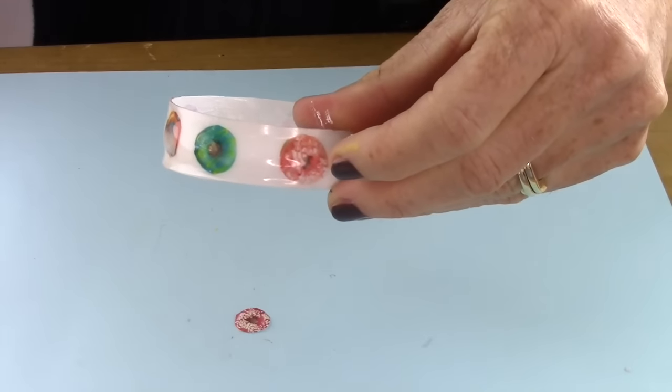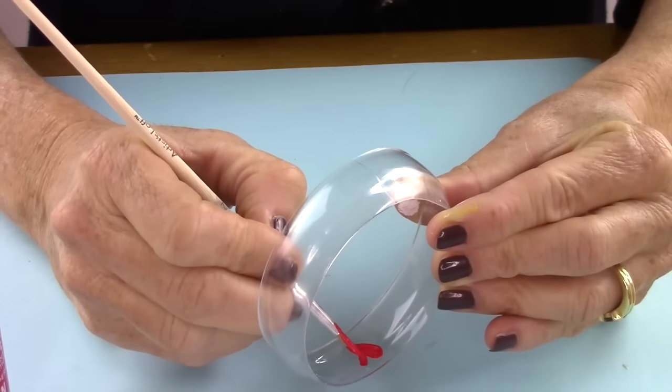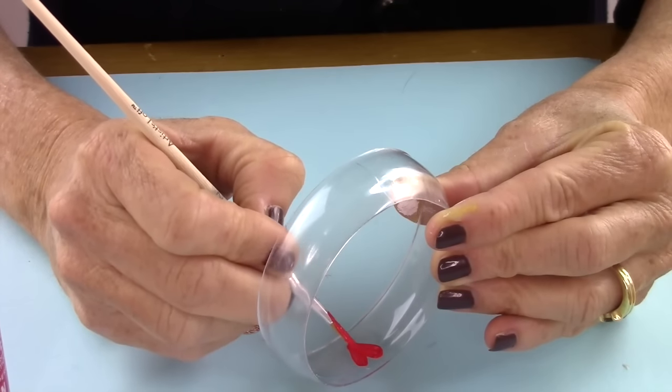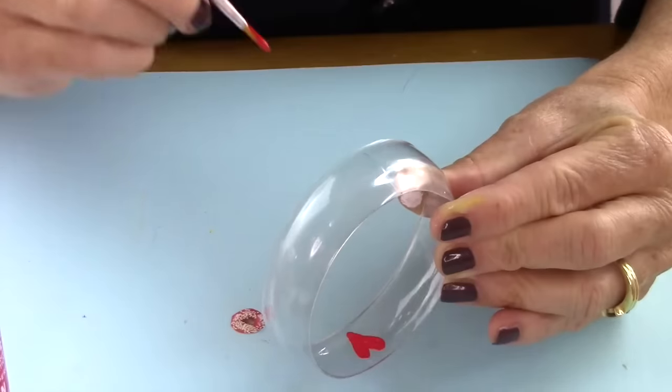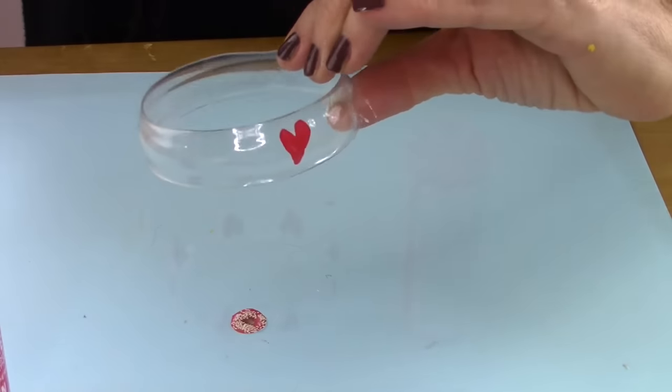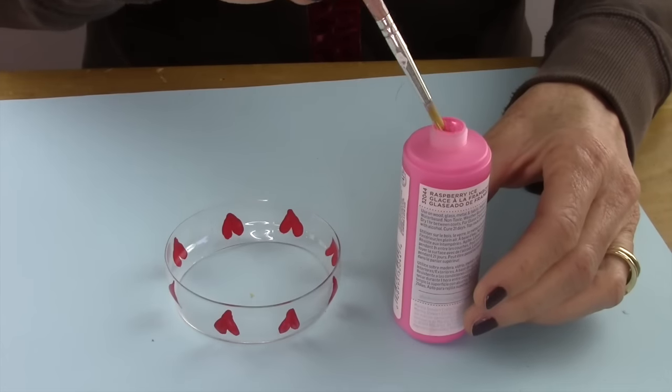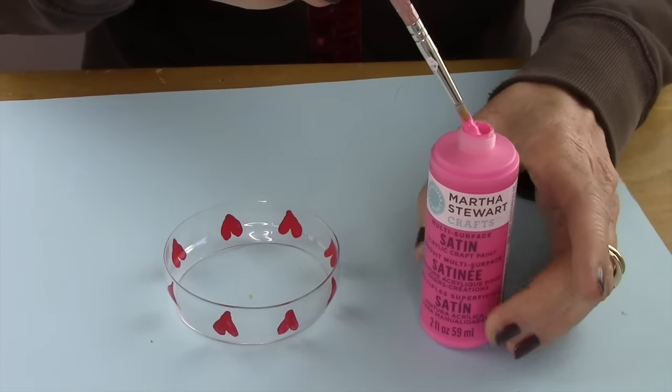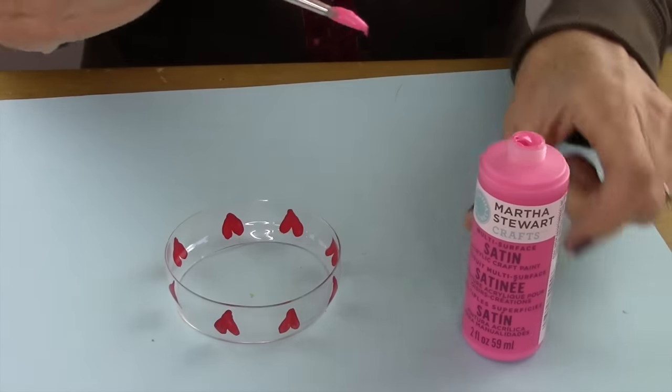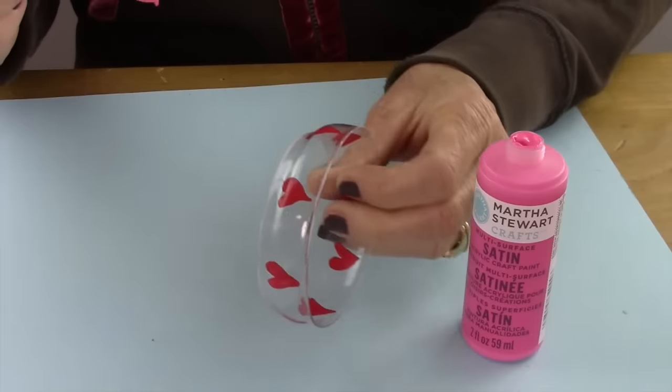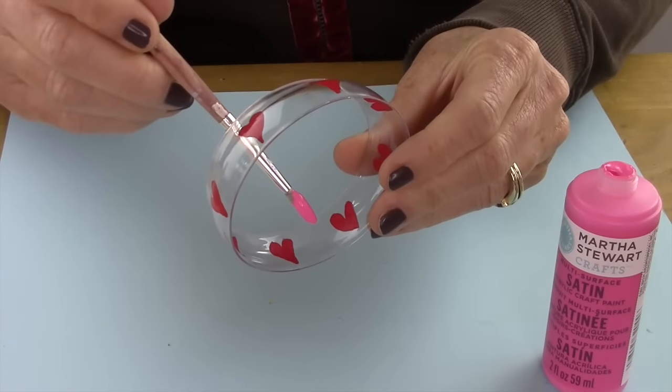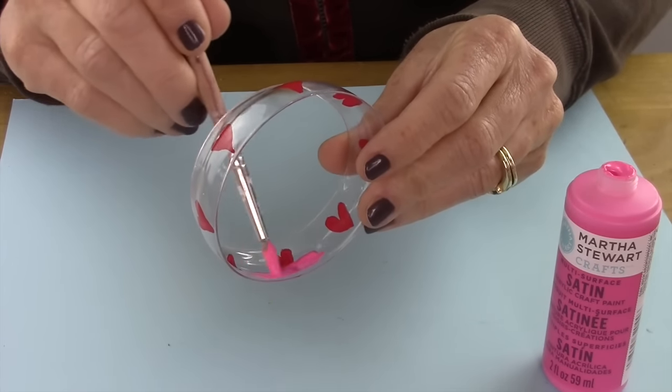Isn't that cool? I think they turn out so cute. On my third bracelet, I decided to paint little red hearts all along the inside. After that dried, I took a hot pink and painted over the hearts.